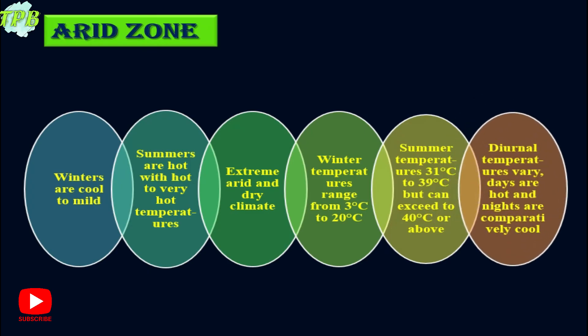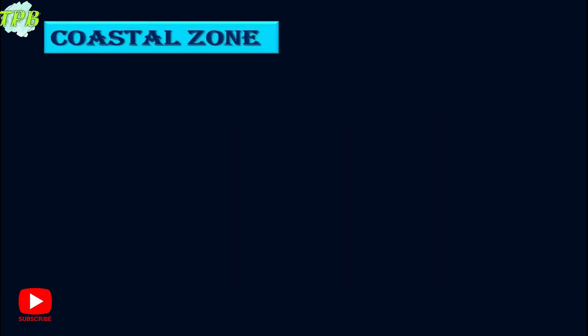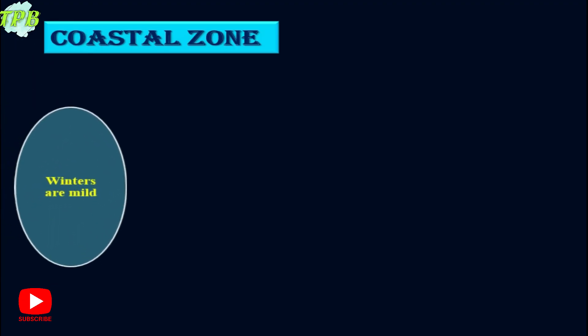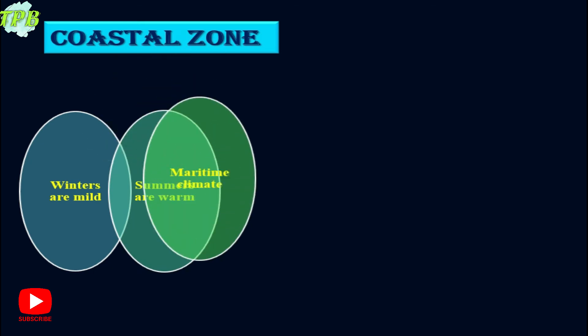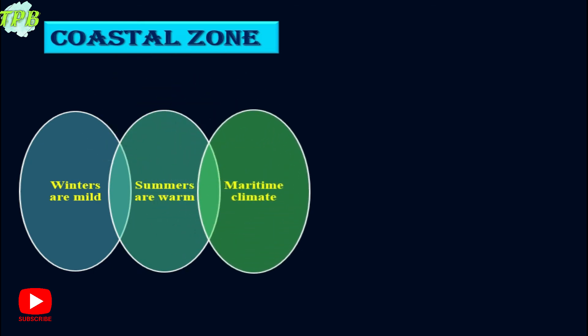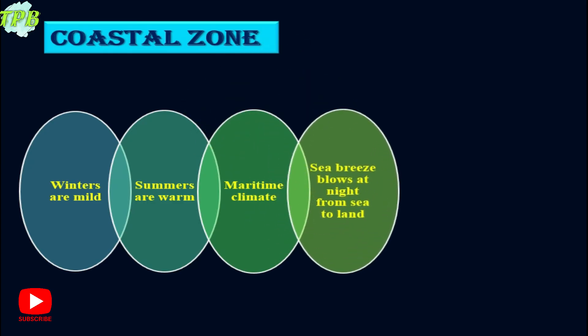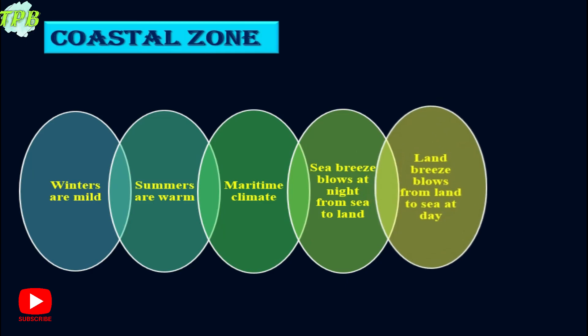The diurnal temperatures vary in the arid zone. Diurnal means the change of temperatures from day to night, so here the days are hot and the nights are comparatively very cool. The coastal zone has mild winters and warm summers. This is also called the maritime climate, with moderate summer and winter temperatures. In the coastal zone there are two winds blowing: the sea breeze blows at night from sea to land, and the land breeze blows from land to sea at daytime.